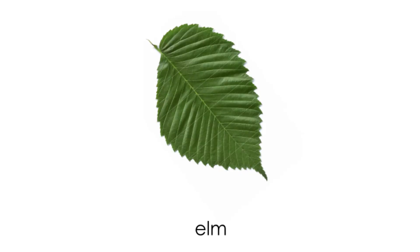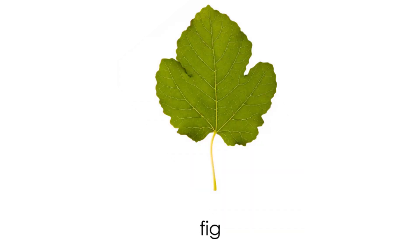Elm trees originated in Asia but now grow all over the Northern Hemisphere. Their leaves alternate in two rows on a stem and are separated with an oval shape. Leaves that grow on fig trees, also called ficus trees, have three to seven lobes. They are often used to cover body parts in sculptures and other art. Fig trees thrive in cool, dry areas.